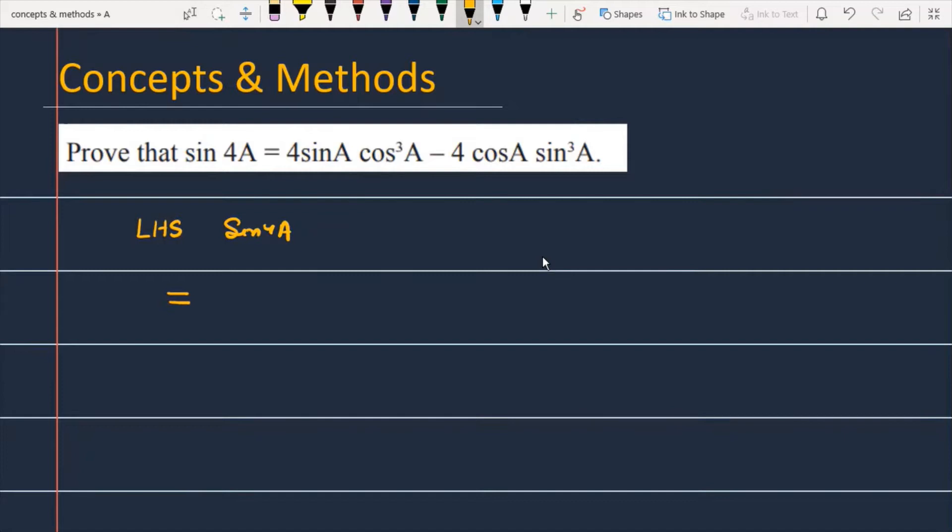So let's start. First of all, I'm going to use the identity which is sin 2A equals 2 sin A into cos A.